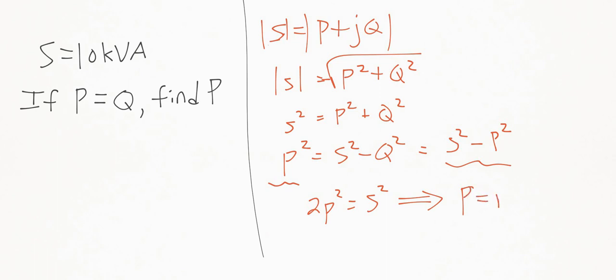We can solve for P as the square root of S squared divided by two. When we plug this in, we get the same value as in the last video, just in a simpler way. I would recommend this approach over the one in the last video. We still get the same answer: 7.07 kilowatts. Did you find this useful? Let me know in the comments below, and until then, enjoy engineering.